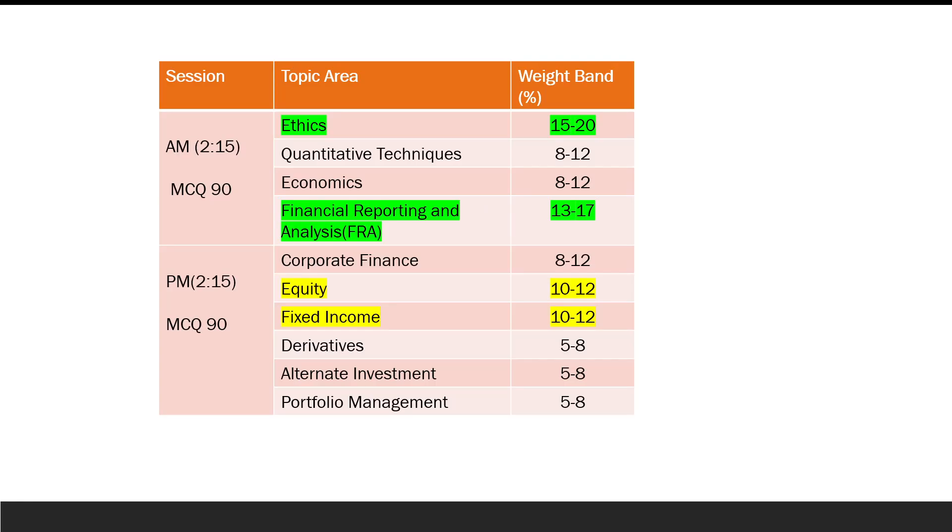Let's quickly recapitulate the topic areas. The ones highlighted in green are the ones which are maximum weighted, followed by the ones highlighted in yellow. As you will be knowing, now in the AM session and the PM session, the topic areas are completely divided, which means that whatever is going to be tested in the AM session is not going to be tested in the PM session and vice versa.